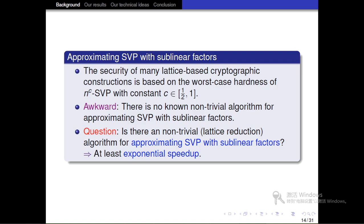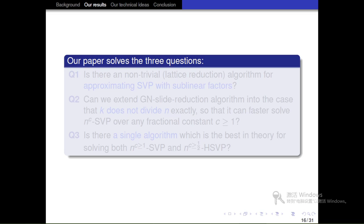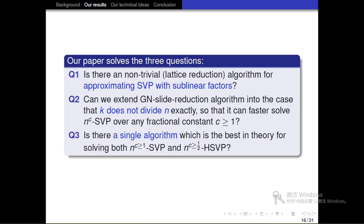We also notice that the security of many lattice-based schemes is based on the worst-case hardness of n to C-SVP with constant C belonging to the interval between 1 over 2 and 1. However, there is no known algorithm for approximating SVP with sublinear factors. Question: Is there a known algorithm for approximating SVP with sublinear factors? If the answer is yes, it would imply at least exponential speedup. Our results solve the following three questions.